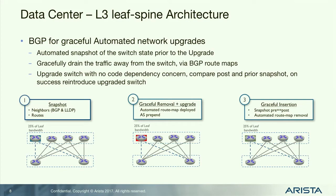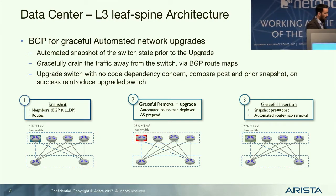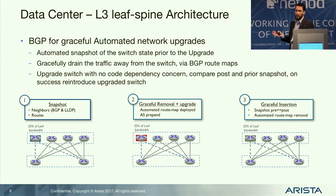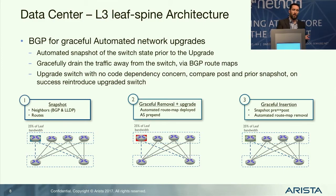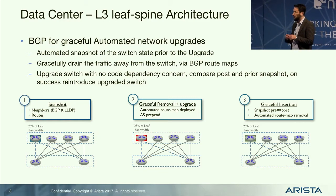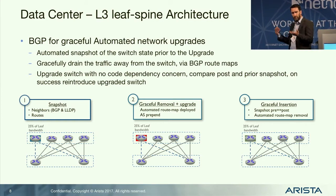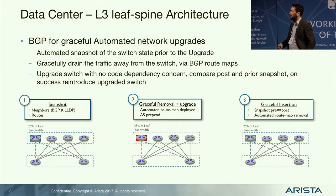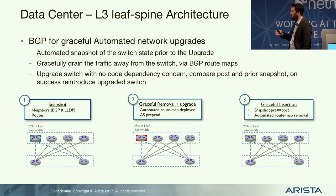The leaf-spine architecture also benefits resiliency. Instead of the old three-tier model with dual supervisors and proprietary ISSU, you now get node-level redundancy. With four spines, losing one only loses 25% of bandwidth. You can use BGP to gracefully drain traffic off a switch using things like G-SHUT community, upgrade it, and reintroduce it — taking the box offline without a single point of failure, with three switches still operating.